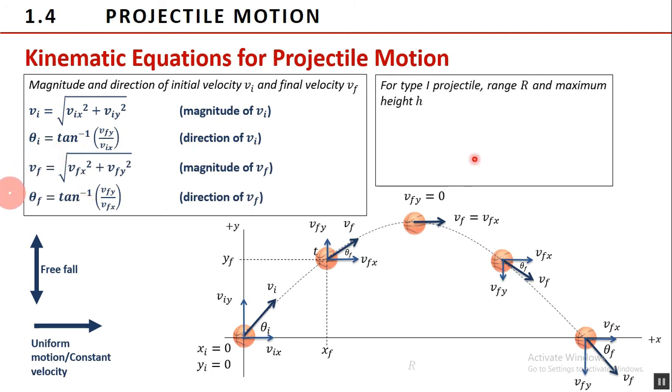For type one projectile, we have derived equations for its horizontal range r and maximum height h. Note these are exclusive for type one projectile only. Range r is expressed as the square of the initial velocity multiplied by the sine of twice the initial angle all over g. While the maximum height h equals the square of the y component of the initial velocity over 2 g.